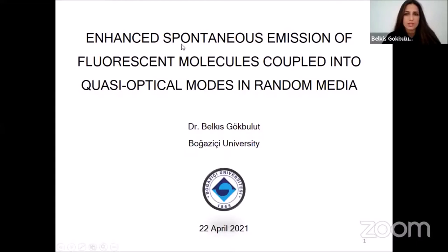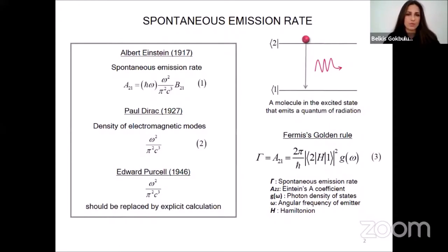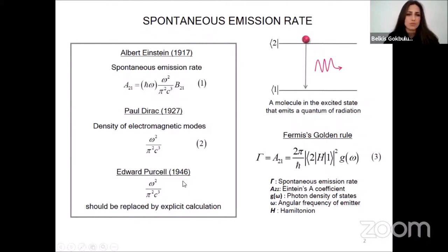Today my presentation is about enhanced spontaneous emission of fluorescent molecules coupled into quasi-optical modes in random media. I will talk about the spontaneous emission rate. The modification of spontaneous emission is considered to be at the heart of light-matter interaction in photonics, after Einstein's proposal in 1917 that spontaneous emission would occur if radiation and matter are to realize thermal equilibrium. In Einstein's proposal, spontaneous emission rate was considered to be an intrinsic property of matter, proportional to equation one. The density of electromagnetic modes was defined in 1927, and David Purcell in 1946 declared that the probability of spontaneous emission is controlled by the geometry of space. When a quantum source is placed inside a photonic cavity structure, the density of photon states changes to allow controlling the spontaneous emission rate of the emitters.